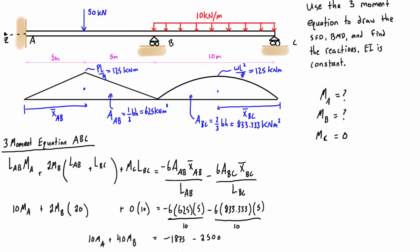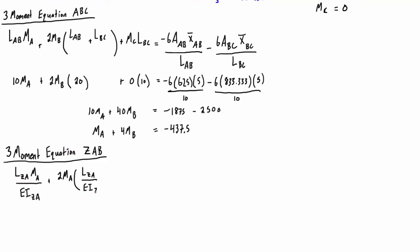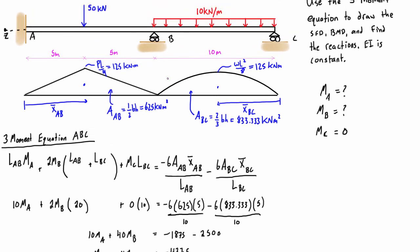So let's go down here and we'll write a three-moment equation for the span ZAB. You'll notice there's some stuff in here like the area of ZA and the x-bar of ZA, and we don't actually have that because we never drew that. We only have—let's go up a little further—